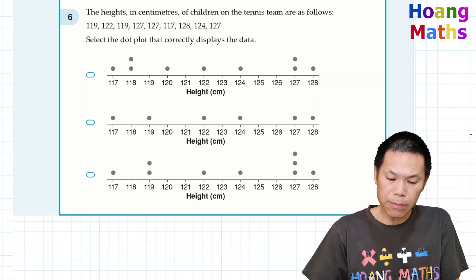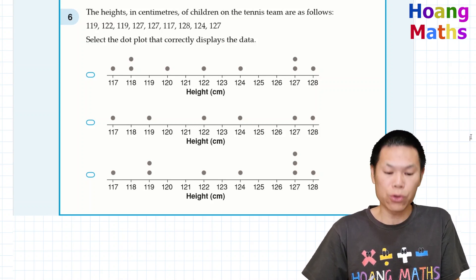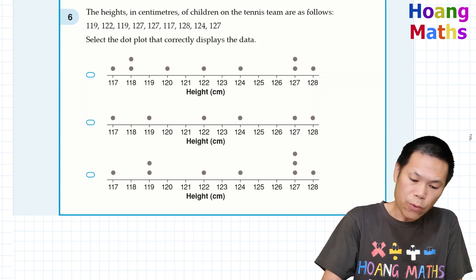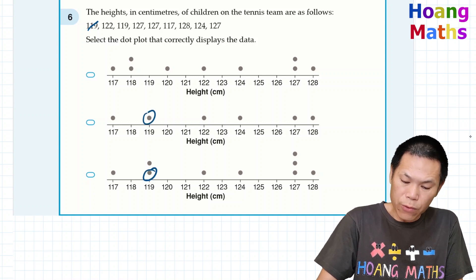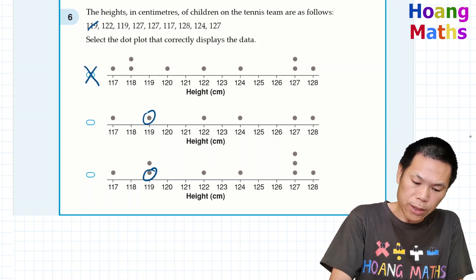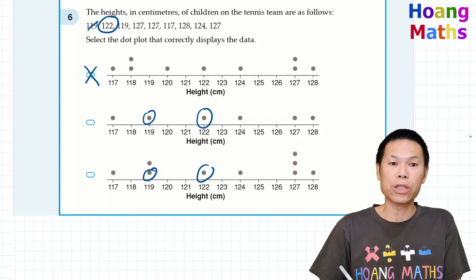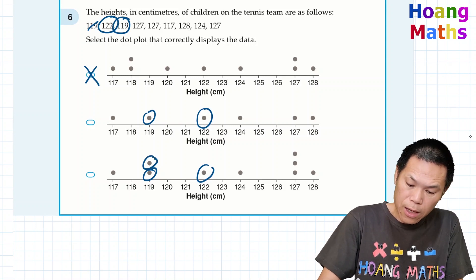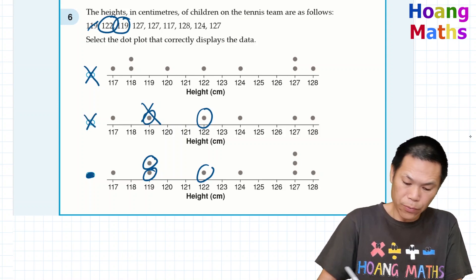Question five: the heights in centimeters of children on the tennis team are given — 119, 122, and so on. Select the dot plot that correctly displays the data. First, we check for 119. The first option doesn't have 119, so that's wrong. We also find another option that doesn't have 119, so we cross that out. The answer is the remaining dot plot.